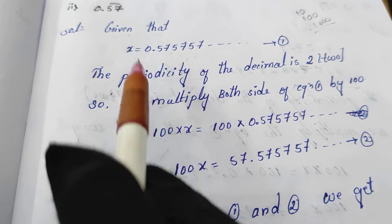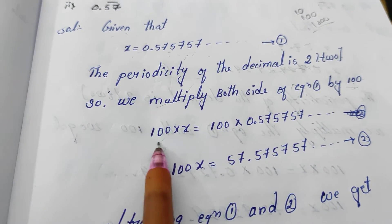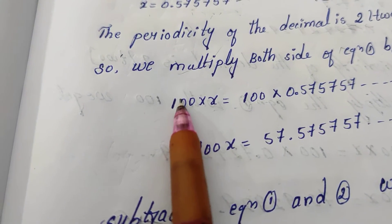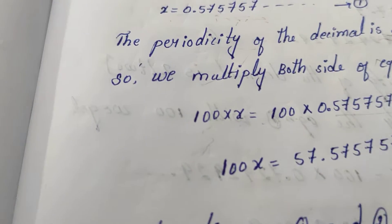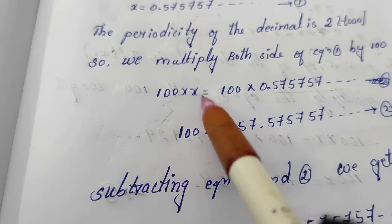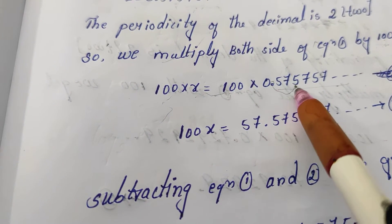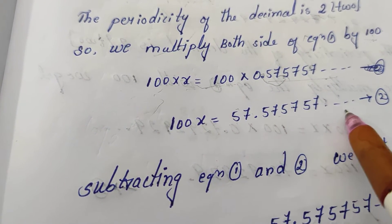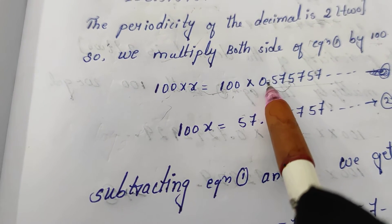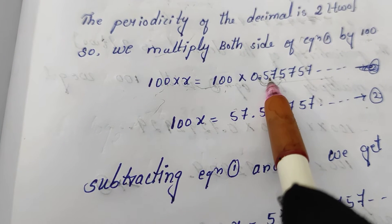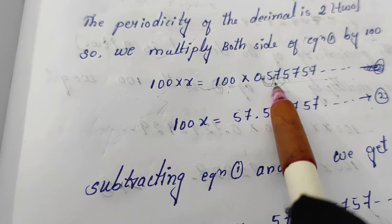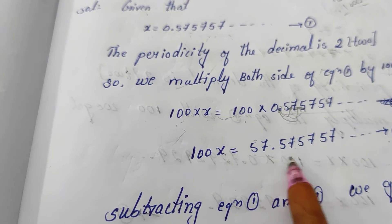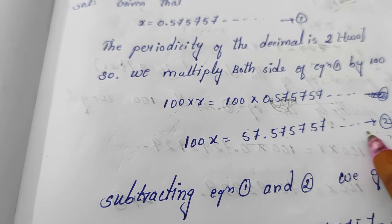What is equation 1? x equals 0.5757. We have to multiply both the LHS and RHS by 100. 100 into x is 100x. When we multiply 100 by 0.5757 and so on, since there are 2 zeros, the decimal point moves 2 places — giving us 57.5757 and so on. So 100x equals 57.5757 up to so on. This is equation 2.